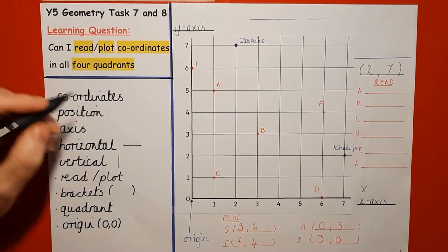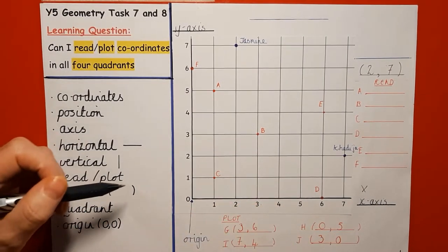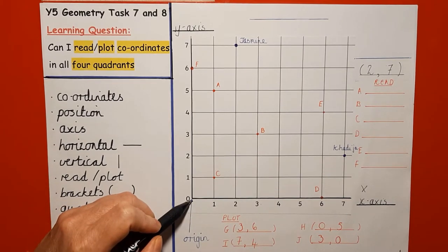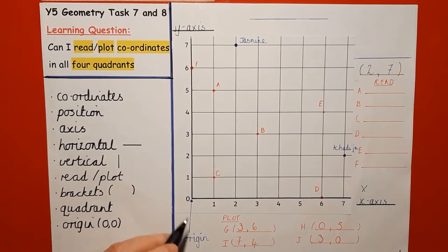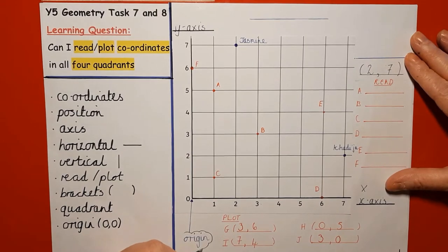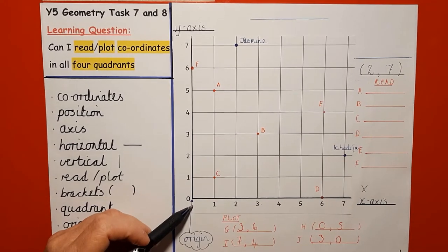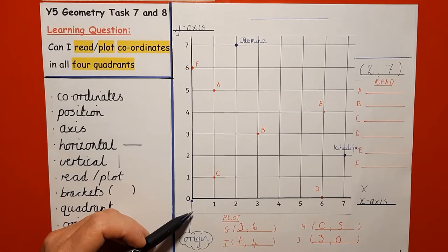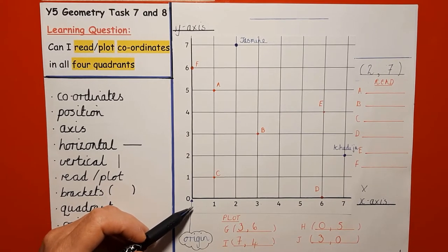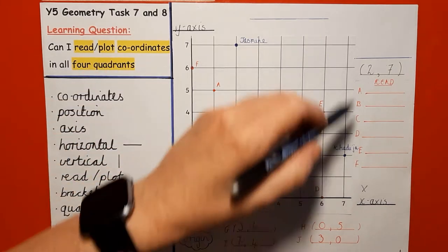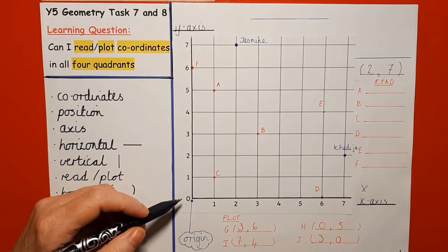Now, each axis at the moment starts with a zero. This point has a special name — I've marked it here. It's called the origin. So what is a coordinate? A coordinate is simply a pair — two numbers that describe a position or a location on a grid or on a graph.